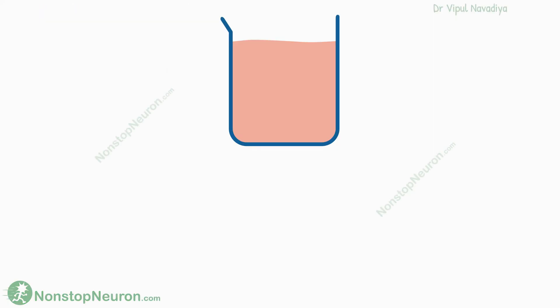Osmolarity is the unit of concentration of a solution. It is expressed as the number of solutes per unit volume of solution. For example, the osmolarity of plasma is about 280 milliosmoles per litre, meaning plasma has that many solutes in 1 litre of water.